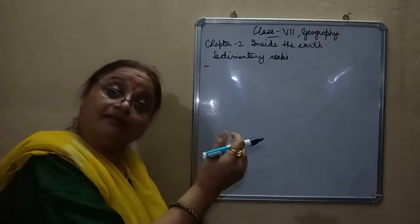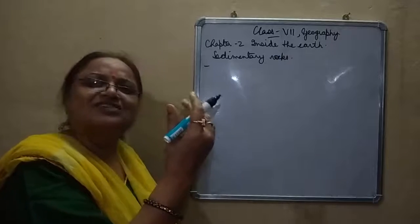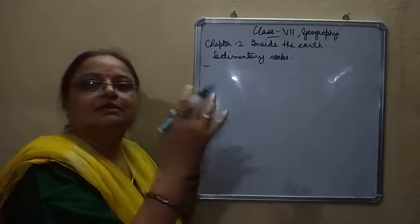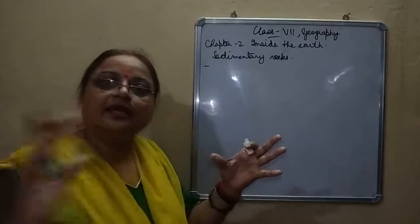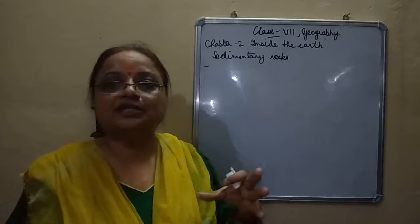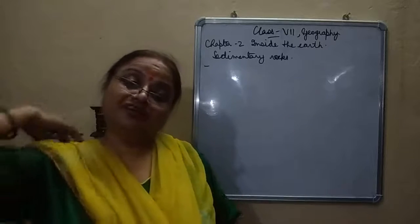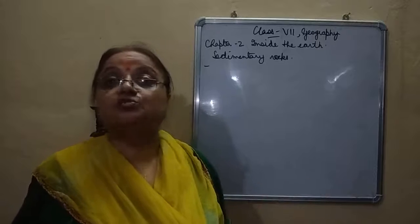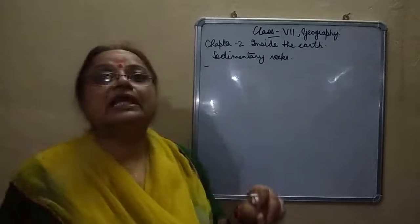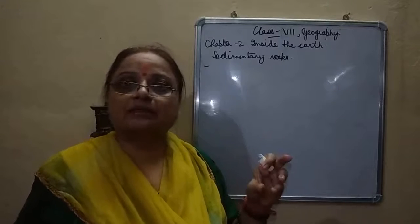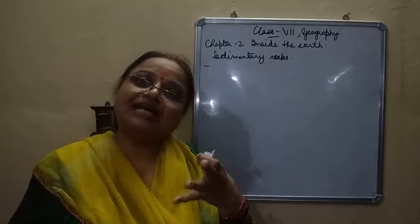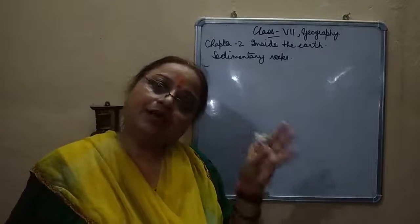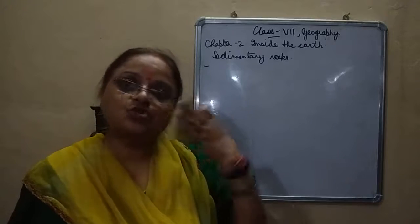Lava comes out of the volcano, it is very heated. As soon as it comes out it solidifies into a solid form right at the volcano's opening. Some lava solidifies outside — that is extrusive — and some sediment solidifies inside only, which we call intrusive.